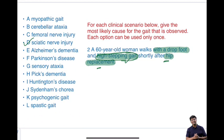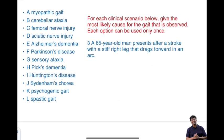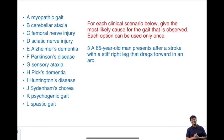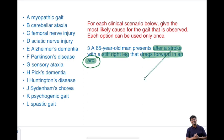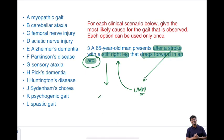In this clinical scenario, the high steppage gait is secondary to hip replacement causing sciatic nerve injury. Third clinical scenario: a 65-year-old man presents after a stroke with a stiff right leg that drags forward in an arc. Stroke results in an upper motor neuron lesion. In upper motor neuron lesion, the stiff leg is due to spasticity, and the resulting gait is called spastic gait.